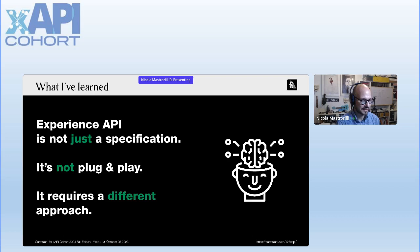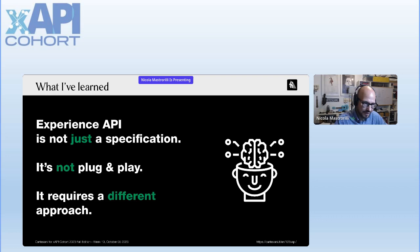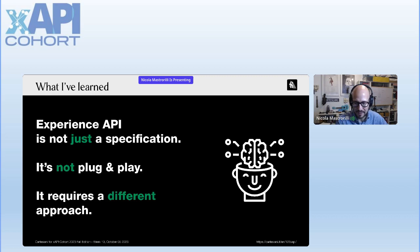This is the only slide I keep the same as my previous presentation from the spring edition. I want to keep it because it's really important to define that Experience API is not just a specification and needs a different approach — it couldn't be a plug-and-play approach. This whole presentation is about facilitation, about creating an environment inside the organization that could be ready and open to an XAPI project.